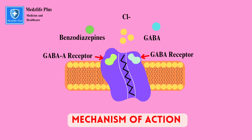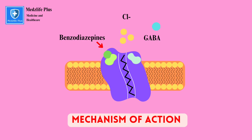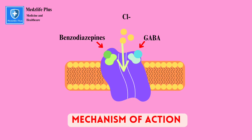Benzodiazepines bind to a specific site on the GABA-A receptor that is distinct from the GABA binding site. When a benzodiazepine molecule binds to its site, it enhances the affinity of the receptor for GABA, meaning GABA is more likely to bind to its own site and becomes more effective in opening the chloride ion channel within the receptor.